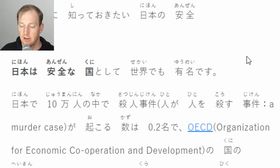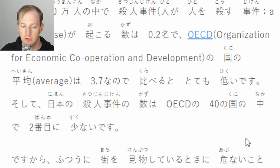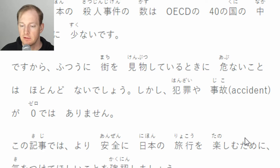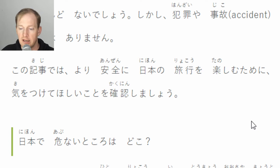日本は安全の国として世界でも有名です - Japan is famous worldwide as a safe country. 日本で10万人の中で殺人事件が起こる数は0.2名で、OECDの国の平均は3.7なので、比べるととっても低いです - Among 100,000 people in Japan, the number of murders is 0.2, compared to the OECD average of 3.7, making it very low. 日本の殺人事件の数はOECDの40の国の中で2番目に少ないです - Japan has the second lowest murder rate among the 40 OECD countries. ですから普通に街を見物している時に危ないことはほとんどないでしょう。しかし、犯罪や事故がゼロではありません。日本で危ないところはどこ?